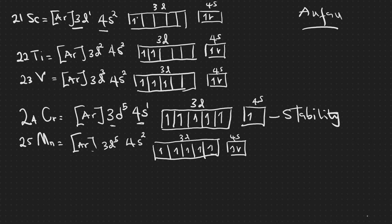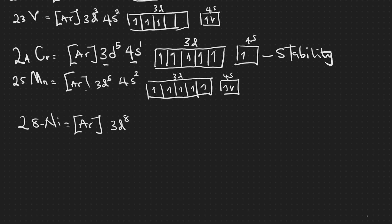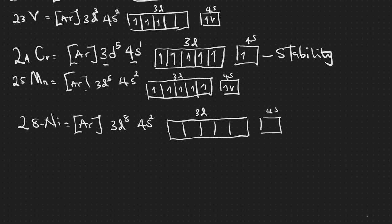Skipping ahead, nickel (number 28) is [Ar] 3d⁸ 4s². In its orbital diagram, 3d has eight electrons distributed across five boxes — three boxes are fully paired and two have single electrons — and 4s has two electrons.